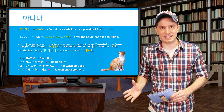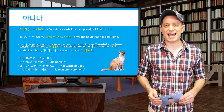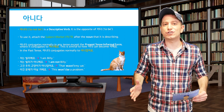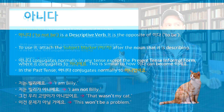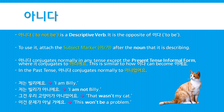But it's used a little bit differently. To use it, you're going to want to attach the subject marker after whatever noun is not. The verb 아니다 will conjugate normally, just like any other verb in any tense, except the present tense informal form, where it will conjugate to 아니에요. This is similar to how 이다 can become 이에요. In the past tense, though, 아니다 will just conjugate normally to 아니었어요.